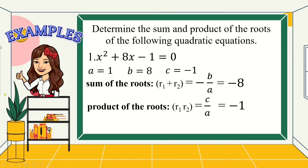Here's a technique: when the value of a is 1, to get the sum, take the value of b and multiply it by negative. In this case, we have 8, so negative times 8 gives us negative 8. For the product of the roots, when the value of a is 1, just take the value of c, and that will be the product of its roots. In this case, the value of c is negative 1, that's why the product is negative 1. Remember, this shortcut is only applicable when the value of a is 1.